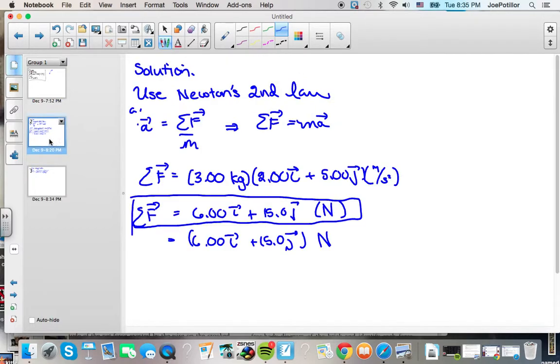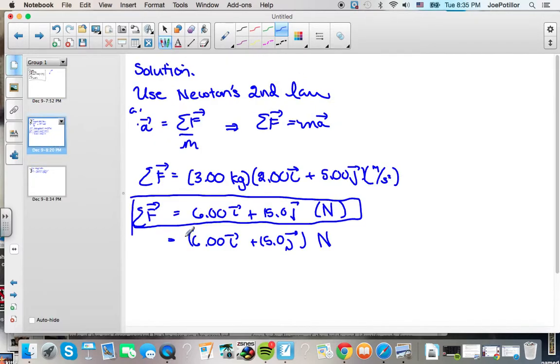And so we already have that in the equation here. We just take the magnitude of this and the magnitude of that. So we use Pythagorean theorem for that.